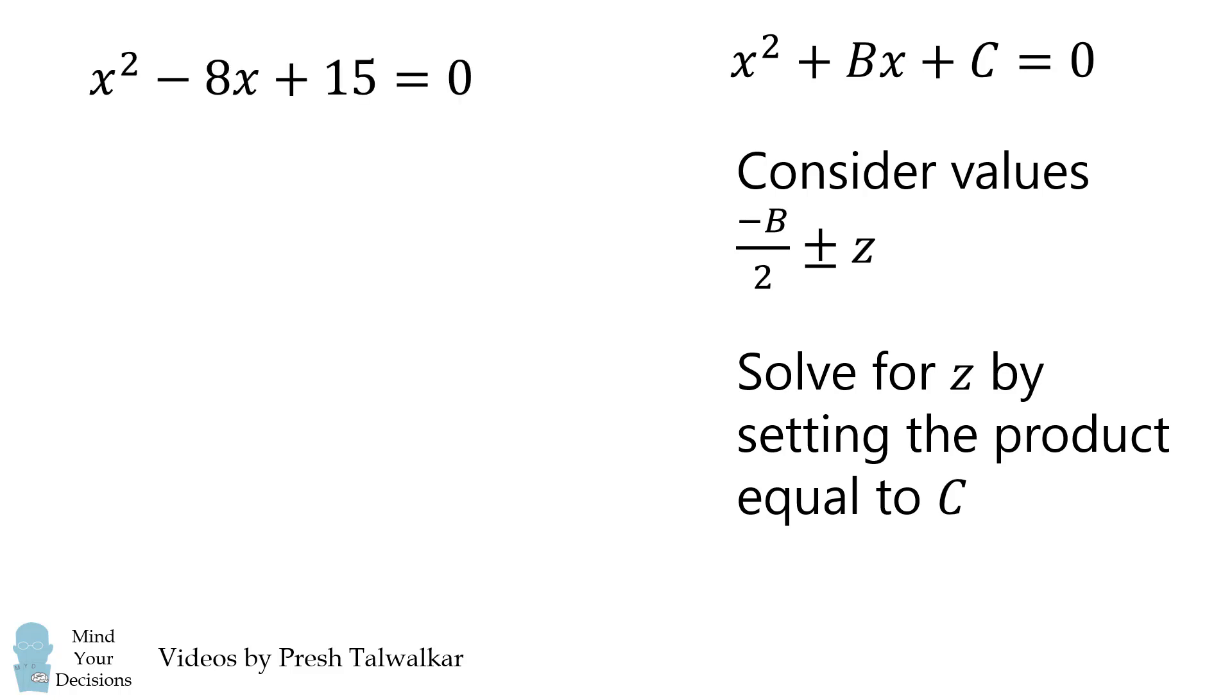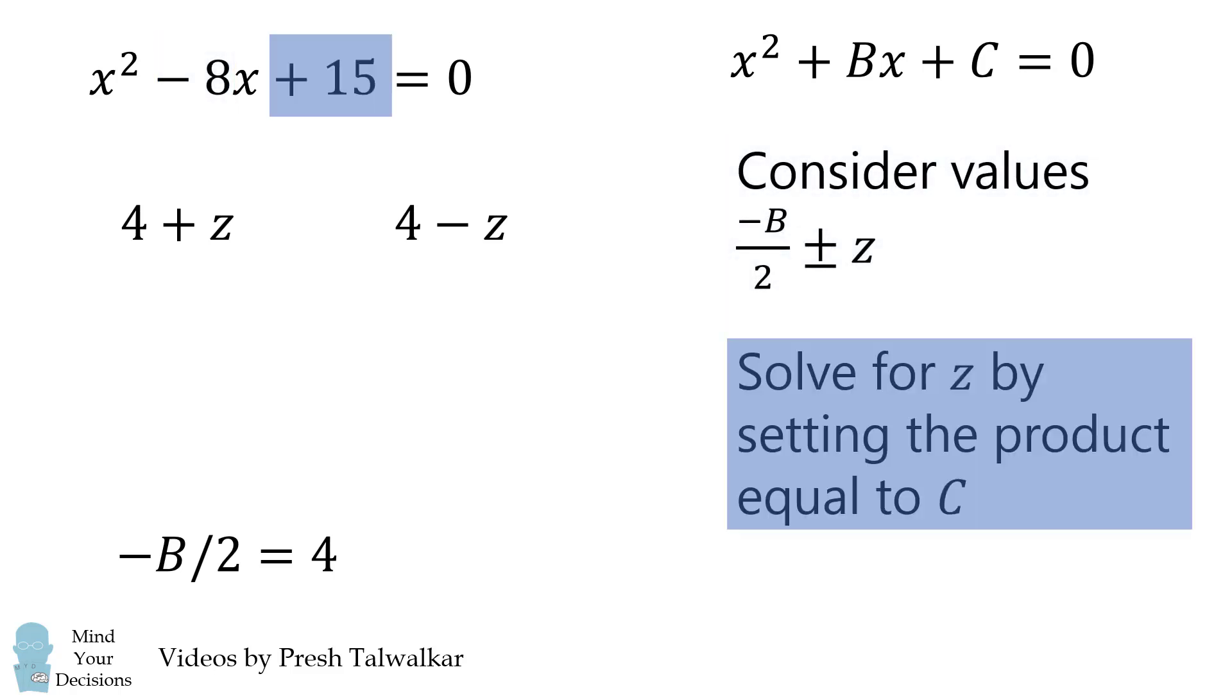So let's take the original equation X squared minus 8X plus 15 is equal to 0. We want to consider two values that have an average of negative B over 2, which is an average of 4. So we want 4 plus Z and 4 minus Z. We want their product to be equal to 15. We take the product of these, and it'll be a difference of squares. 4 squared minus Z squared is equal to 15. We can readily solve this equation and get Z is equal to plus or minus 1. We then take plus or minus 1 from negative B over 2. So we have 4 minus 1, which is equal to 3, and we have 4 plus 1, which is equal to 5. And these are the two values we found earlier when we were solving this equation.